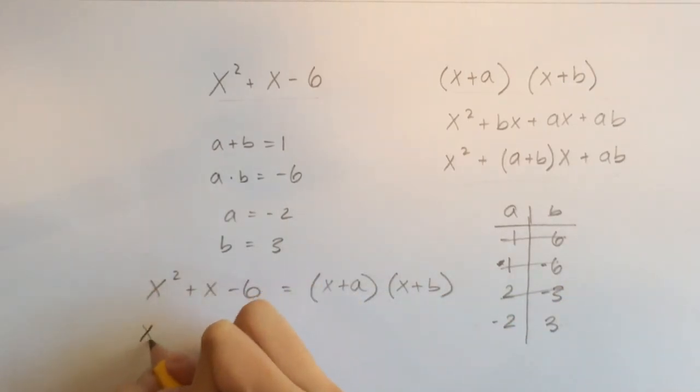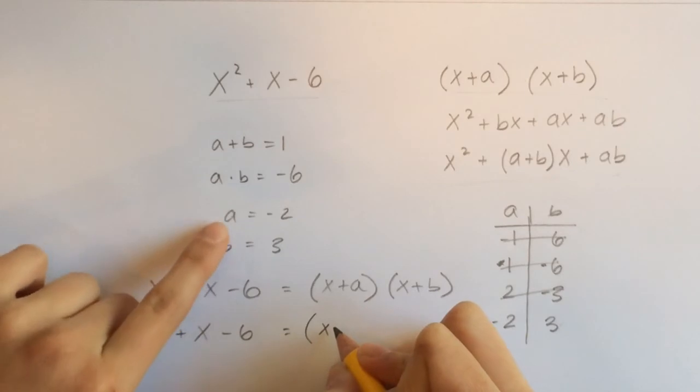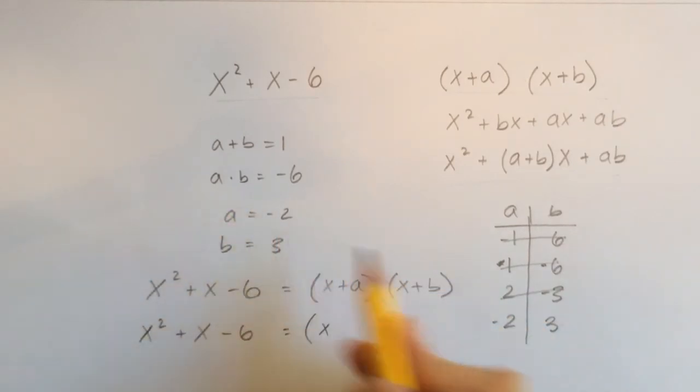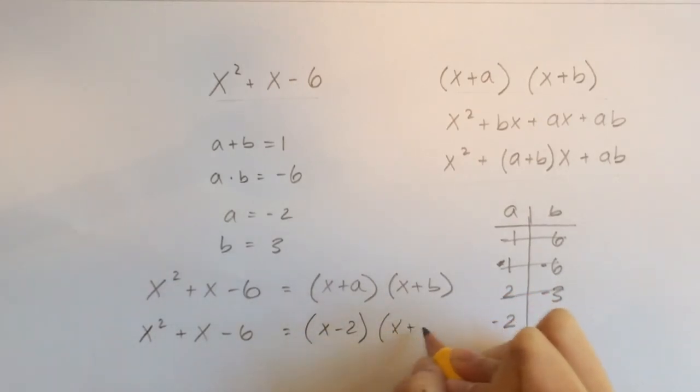And we can say that x squared plus x minus 6 equals x plus minus 2, which is the same thing as x minus 2, times x plus 3.